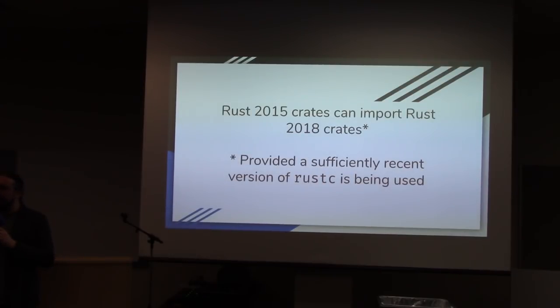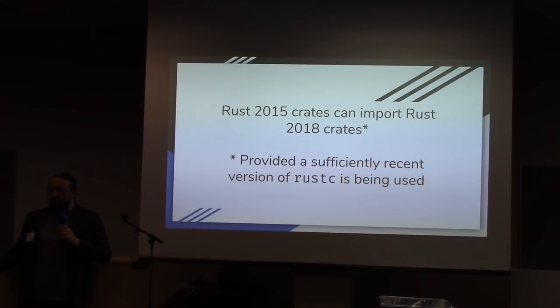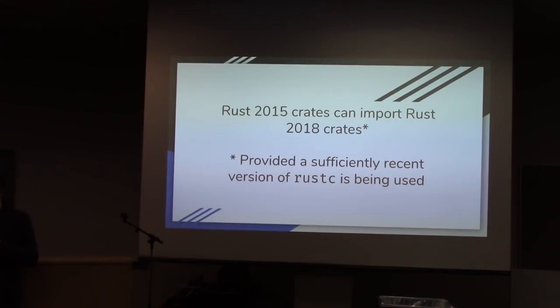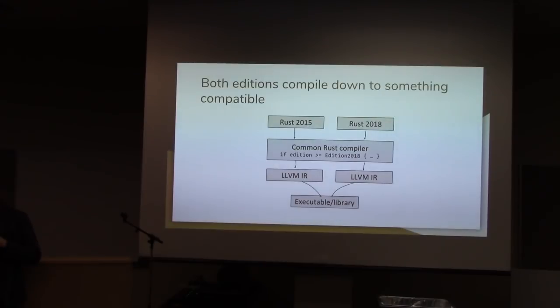Regular caveats apply, you have to have a sufficiently recent version of the compiler. But that applies like any new language feature. You know, you want a question mark operator? Well, you have to have the rustc that supports it. This works because both editions use the same compiler. There's just some flags in the compiler. Is the current crate Rust 2018? Okay, do this thing differently instead. But they both compile down to LLVM IR. It all gets linked together.